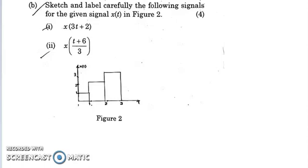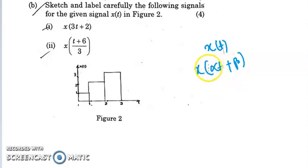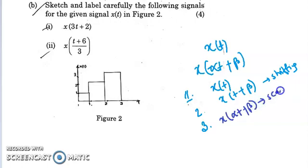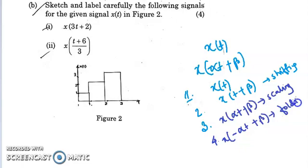We know that for finding the shifted or scaled version of a signal, the procedure for finding X(αT+β) is as follows. First we draw X(T), then in the second step we draw X(T+β) — this is simple shifting. Next we perform the scaling operation to get X(αT+β), and lastly we do the folding or reversal operation to get X(−αT+β).